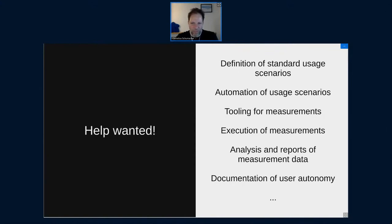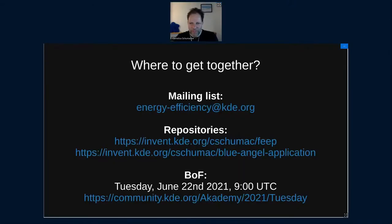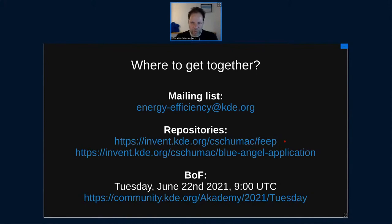I'd like to invite you to join this effort and do something about sustainable computing. We have a mailing list at energy-efficiency@kde.org. There are also two repositories: one for energy measurements — the FEEB repository — meant as an open project across applications and maybe across communities; and another repository for making the Blue Angel application work transparent. I've also scheduled a BoF for Tuesday — please join me there for more in-depth discussions about what we are doing and how you can help.